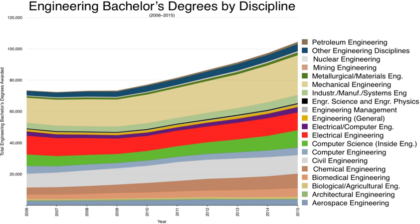Engineering education is the activity of teaching knowledge and principles to the professional practice of engineering. It includes an initial education, and any advanced education and specializations that follow. Engineering education is typically accompanied by additional postgraduate examinations and supervised training as the requirements for a professional engineering license. The length of education and training to qualify as a basic professional engineer is typically 8–12 years, with 15–20 years for an engineer who takes responsibility for major projects.